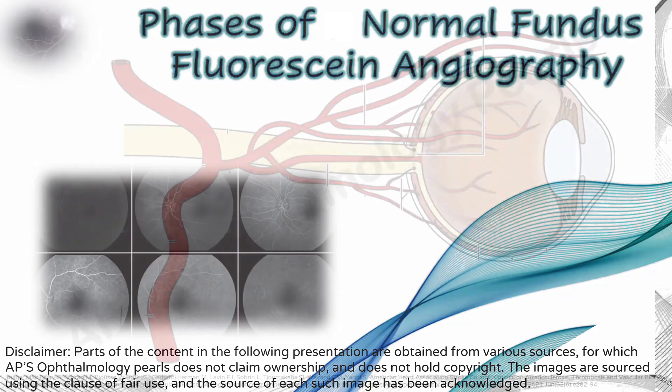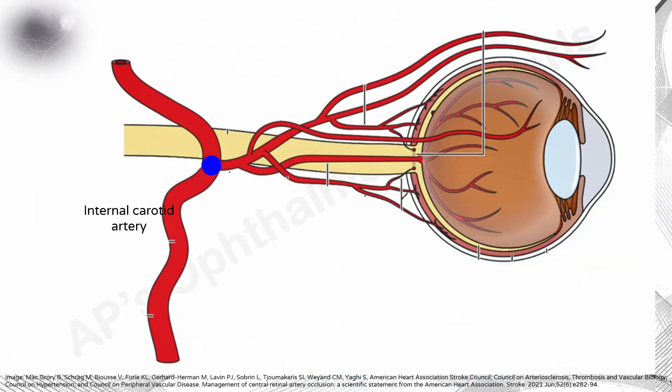During normal fundus fluorescent angiography, fluorescent travels from the internal carotid artery to the ophthalmic artery, to both the posterior ciliary arteries and the central retinal artery.